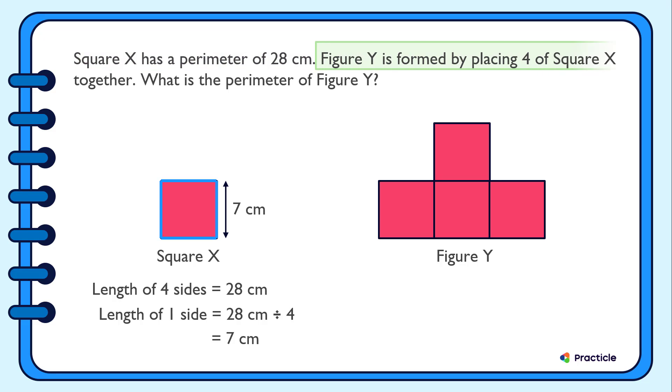We are given that Figure Y is formed by placing 4 of Square X together. And we are supposed to find the parameter of Figure Y. Do you know how to do that? Well, one way to solve this is to trace the outline of Figure Y and count how many sides of 7 cm it has. Let's do this together.